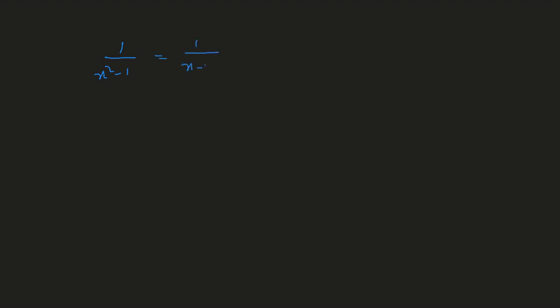Let's take a simple question: 1 over x² minus 1. The first step is to factorize the denominator, giving 1 over (x − 1)(x + 1). We have the first case — non-repeated linear factors — so we split this fraction into A over (x − 1) plus B over (x + 1). Now we need to use different steps and simplifications to figure out the values of A and B.